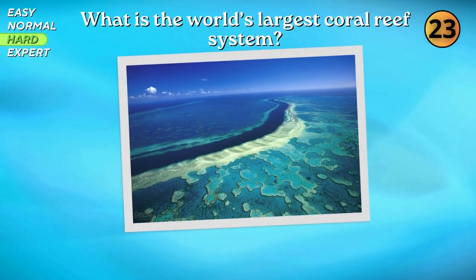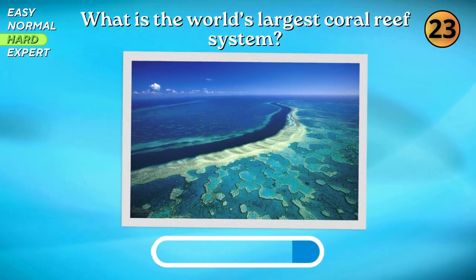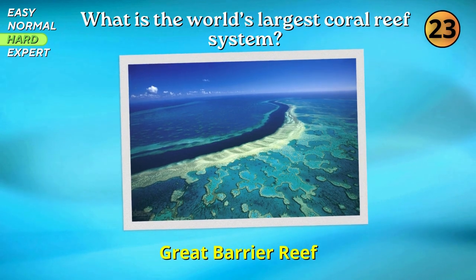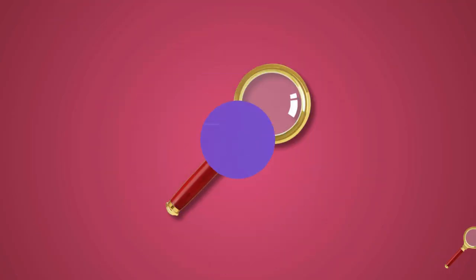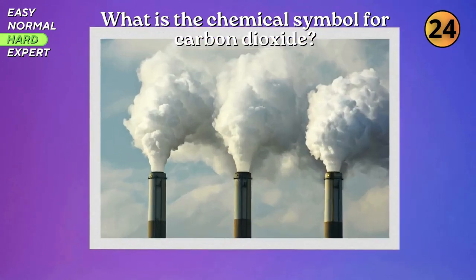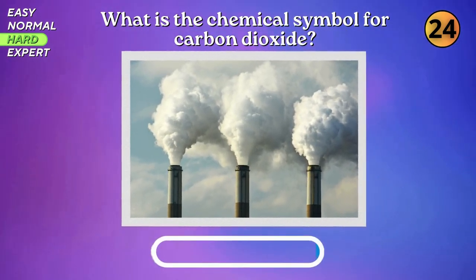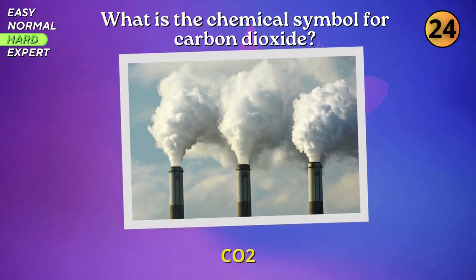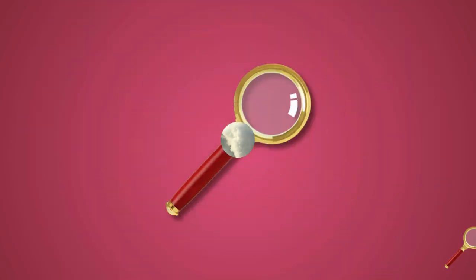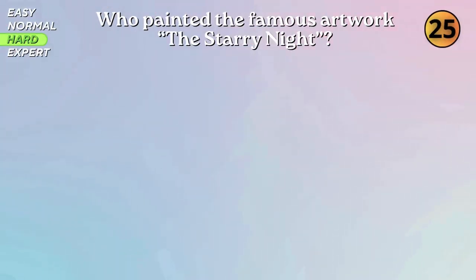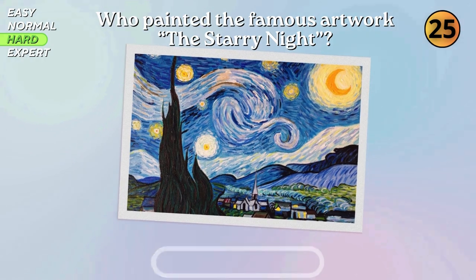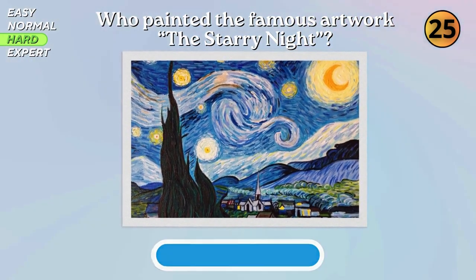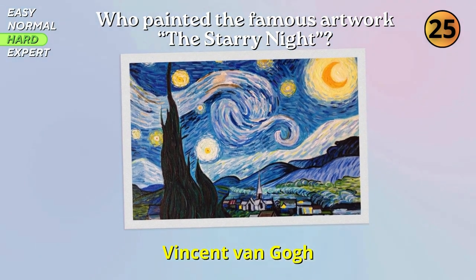What is the world's largest coral reef system? Great Barrier Reef. What is the chemical symbol for carbon dioxide? CO2. Who painted the famous artwork The Starry Knight? Vincent van Koch.